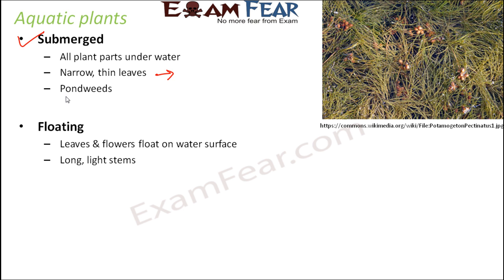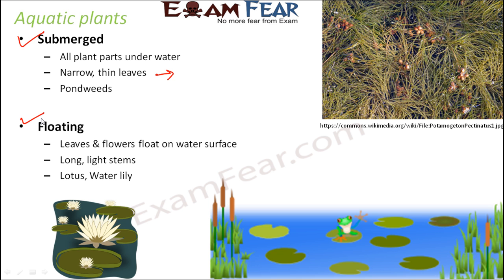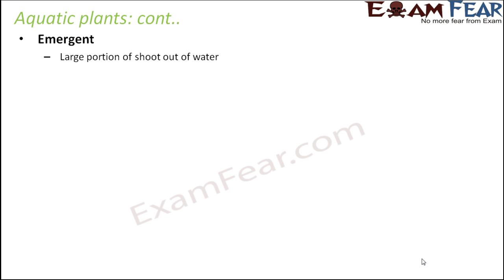The second type of aquatic plant is floating plants. These plants have their leaves and flowers floating on the water surface. The bottom parts — roots and stem — remain below the water, but the leaves and flowers are seen on the surface. These plants have long, light stems which allow them to reach the surface. Lotus and water lily are examples of such plants.